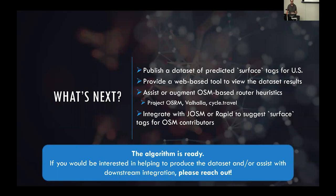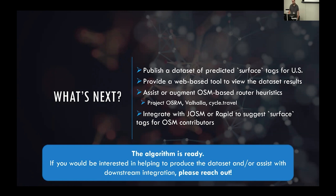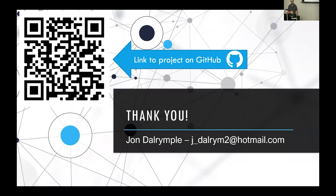So what's next? I want to recruit help from anybody and their companies that have compute resources to allow me to publish a dataset of predicted surface tags in the United States. The National Agricultural Imagery Program includes a lot of imagery, and I can't really do it on my home computer in a realistic amount of time. I would love to scale this across the United States. I feel like this can assist or augment any OSM-based router heuristics — Project OSRM, Valhalla, Cycle.Travel — and I'd love to integrate with JOSM and Rapid to suggest a surface tag. If you or your company could pitch compute resources to run this model across the United States, I would love that. My name is John Dowerpole — here's a QR code to my project and my email. Thank you so much.